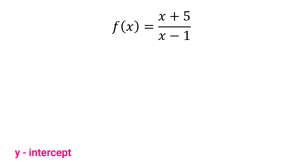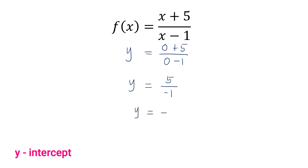Using our first example, f(x) = (x + 5) / (x − 1). Since neither numerator nor denominator is factorable, we proceed to step 2: substitute 0 for all x's. So y = (0 + 5) / (0 − 1) = 5 / (−1) = −5. Hence, the y-intercept is negative 5, meaning the graph will intersect the y-axis at negative 5.